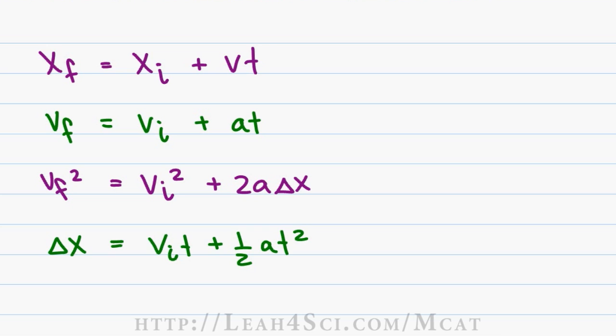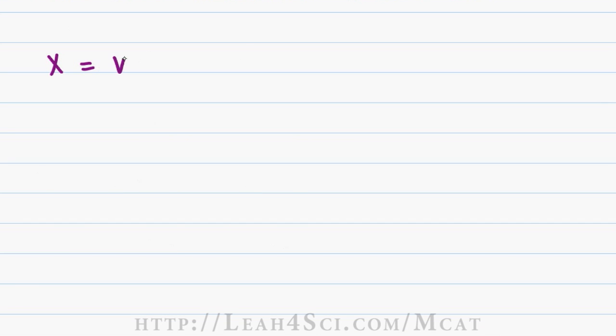So let's go through them one at a time to show you how you can rewrite them and understand the different forms of the same equation that you'll see. Starting with the first one, notice that we have x_f = x_i + vt. If your problem starts at x equals zero, you may drop the x and simply have the form x = vt.